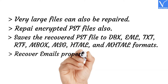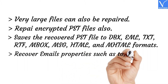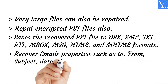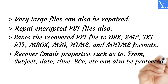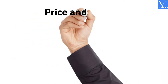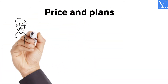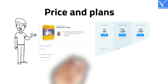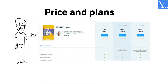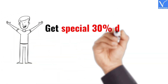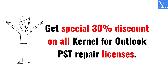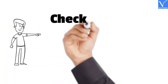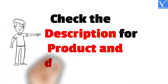Recovers email properties such as to, from, subject, date, time, BCC, etc. The price and plans of Kernel for Outlook PST Repair are shown on the screen. Our viewers get a special 30% discount on all Kernel for Outlook PST Repair licenses. The product and discount links are provided in the description.